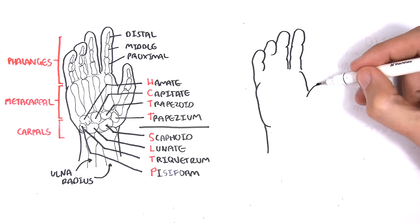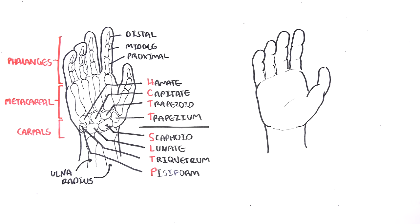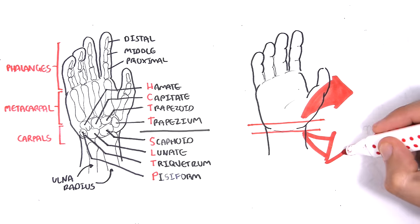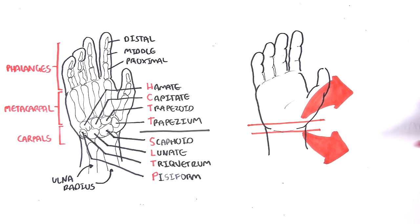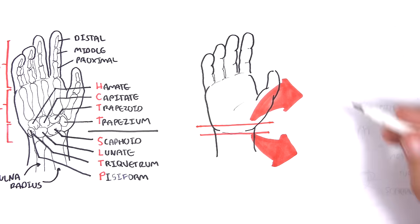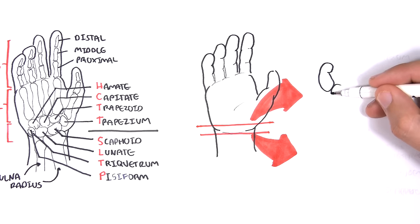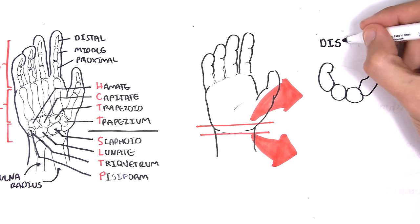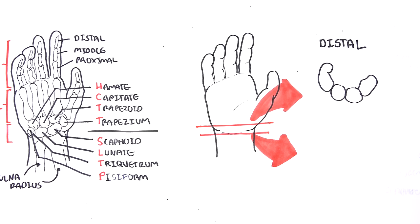Drawing this same right hand diagram again, looking at it from a palmar view, imagine cutting a slice through these two sections at the carpal bones. We are basically looking at the four distal carpal bones on the top and then the other four proximal carpal bones.